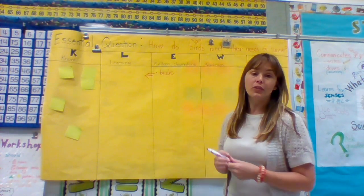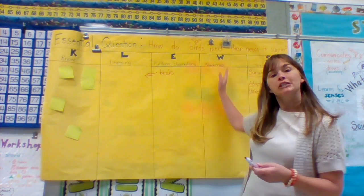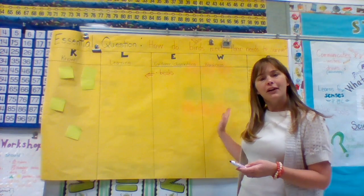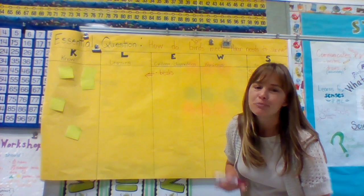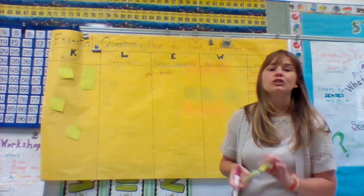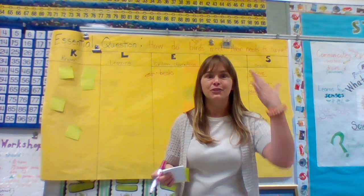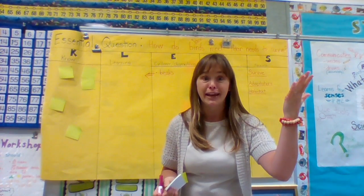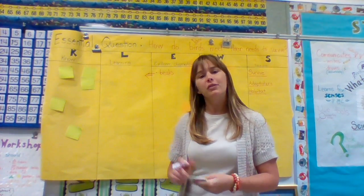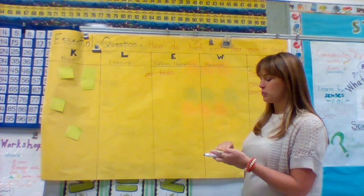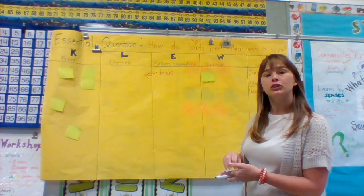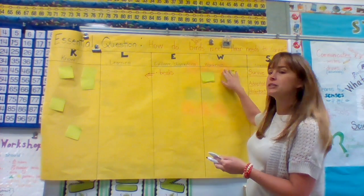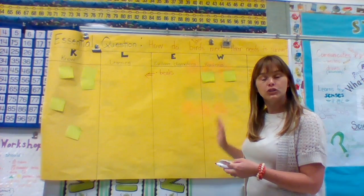One of my favorite columns on the Clues Chart is the place for wondering. I really make this an interactive column. Throughout the unit, students will come up with questions, and you're thinking, I don't know the answer to that, or that's not where we're going today. Well, this W column really gives you a chance to validate their questions. Students can actually write their questions and post them right up onto the chart.